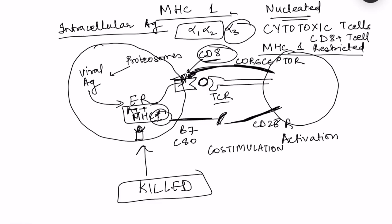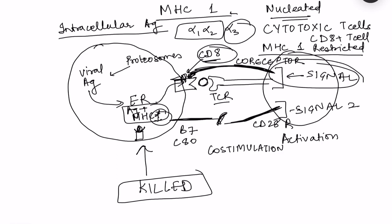There are two signals required for T cell activation: signal 1 is the antigen-TCR interaction, and signal 2 is the co-stimulation. If only signal 1 occurs without signal 2, the T cell becomes inactivated and unresponsive to that particular antigen - it is treated as non-harmful and the T cell becomes anergic.